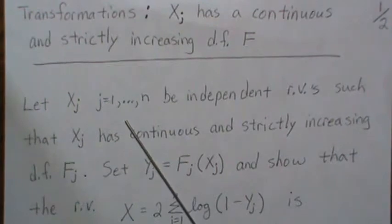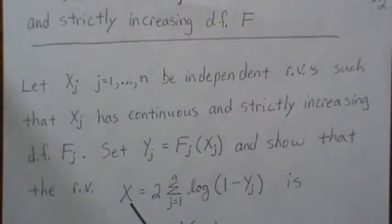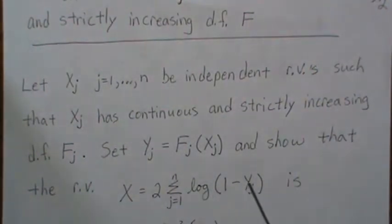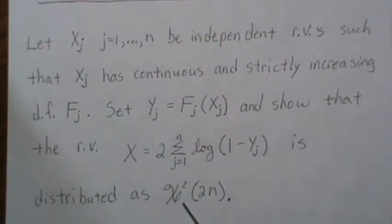So this is what we have and we want to show that the random variable X which is -2 times the sum of the log of (1-Yj) is distributed as a chi-squared with 2n degrees of freedom.